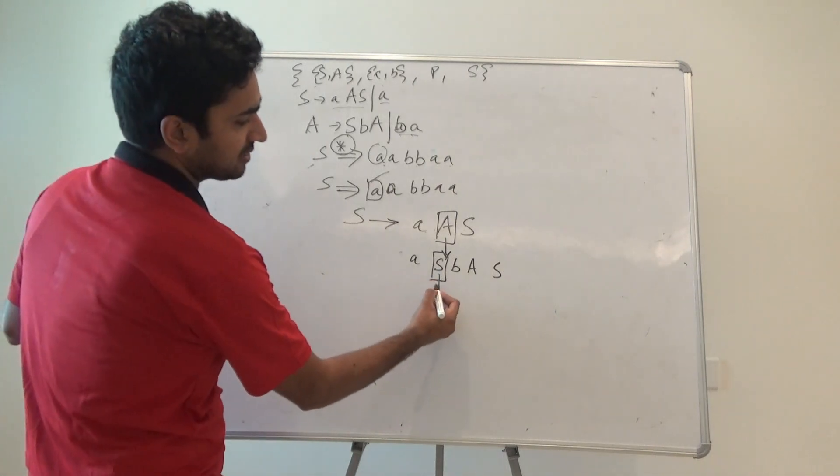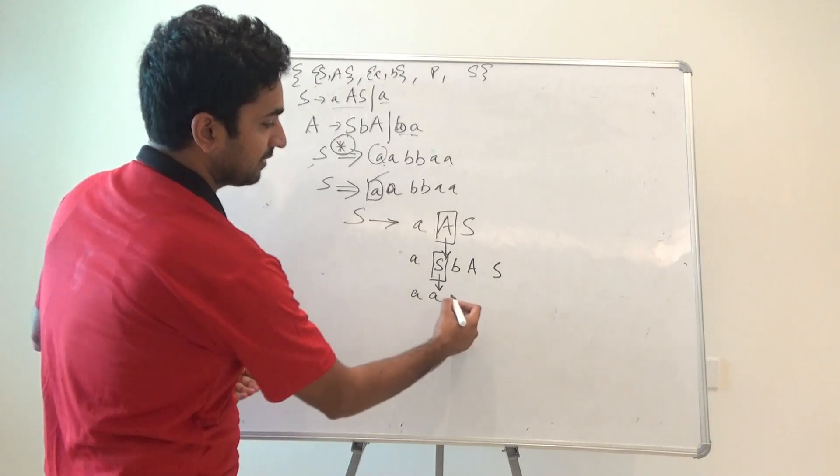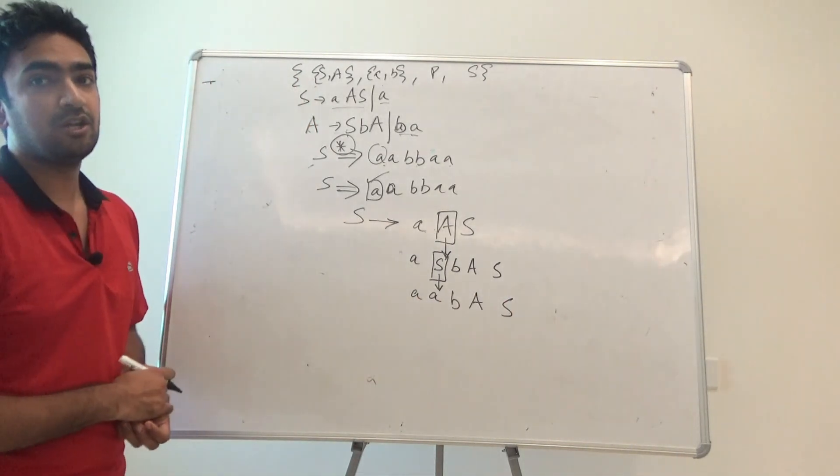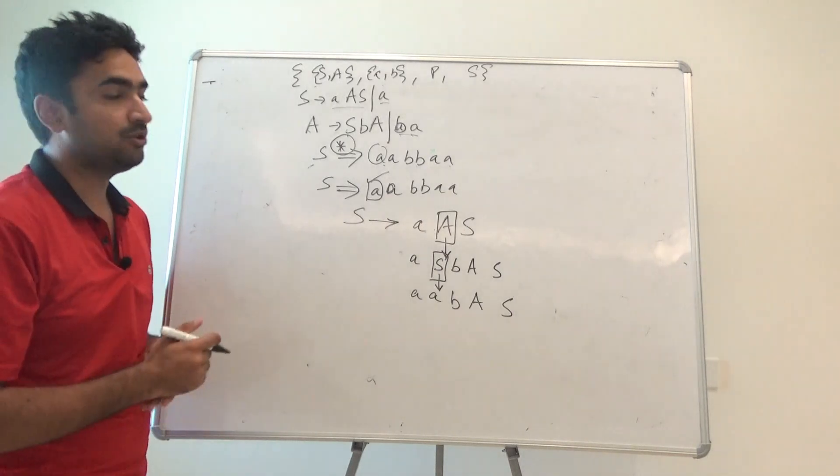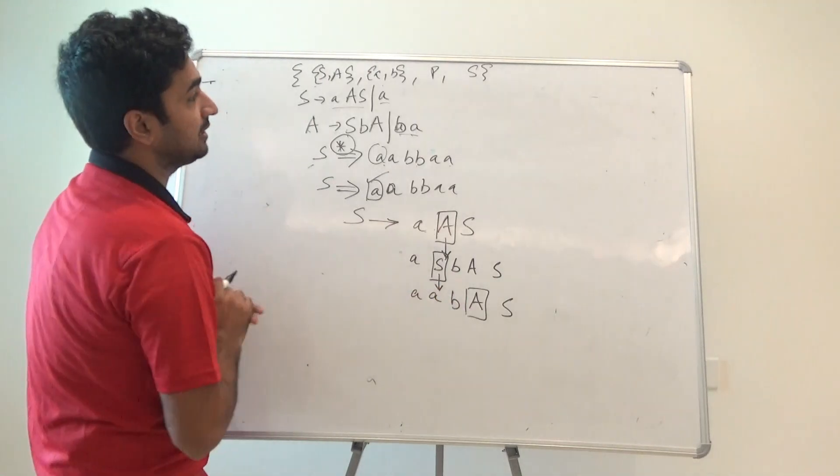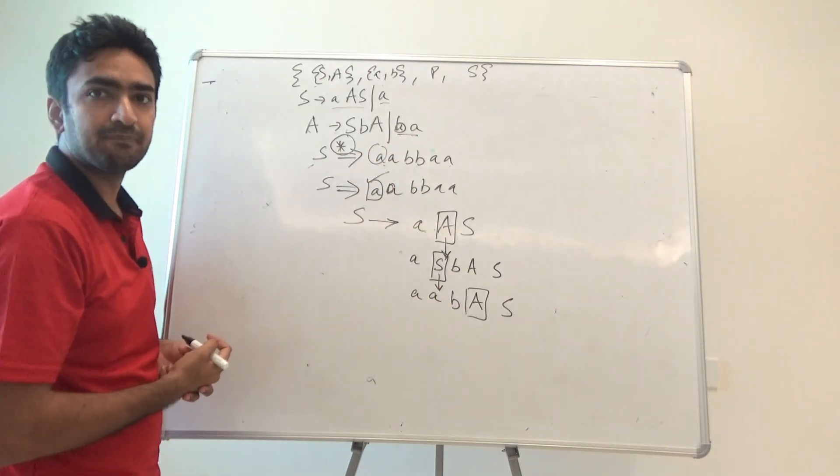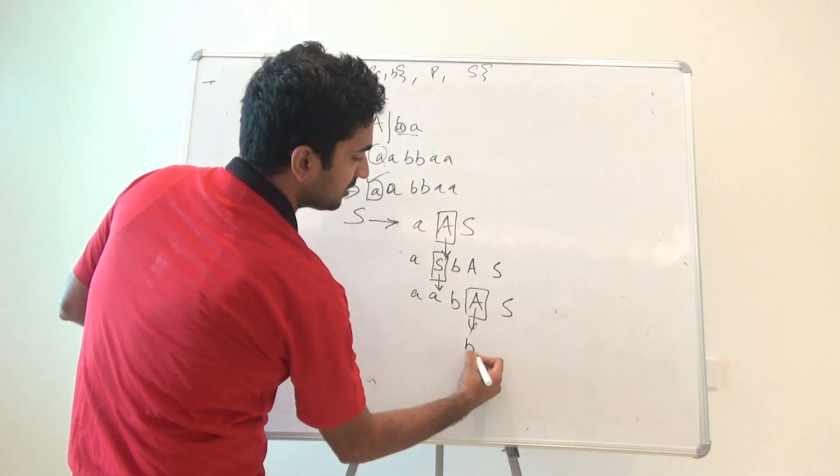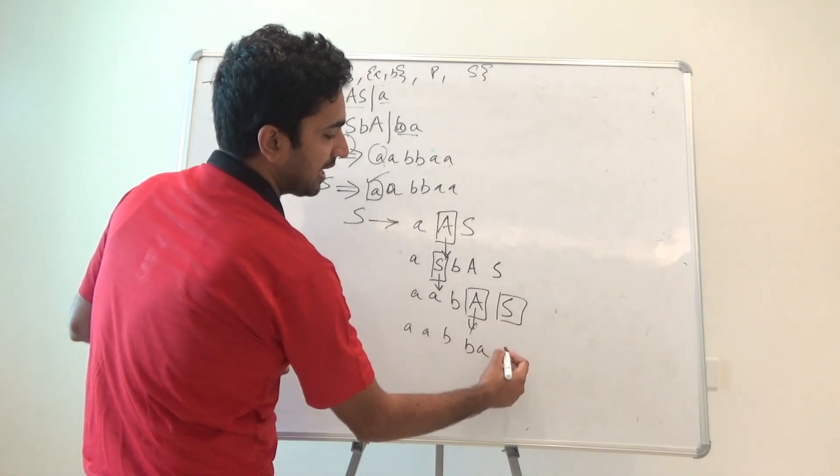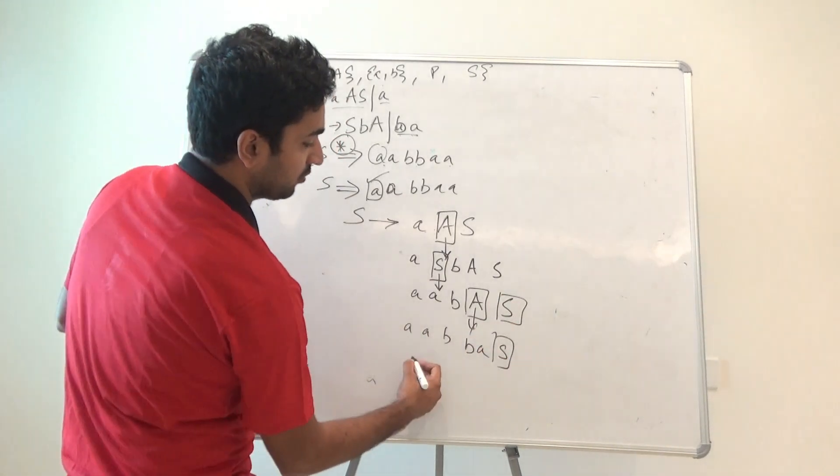I can pick any out of it. Since I want to derive aabbaa, I can just pick a small A of it. So I got double A, then we have got this b, and then we have got A and S. Now clearly, guys, your A value—the leftmost non-terminal is this particular part. This is also generating your ba. I can write that clearly, so this is generating ba.